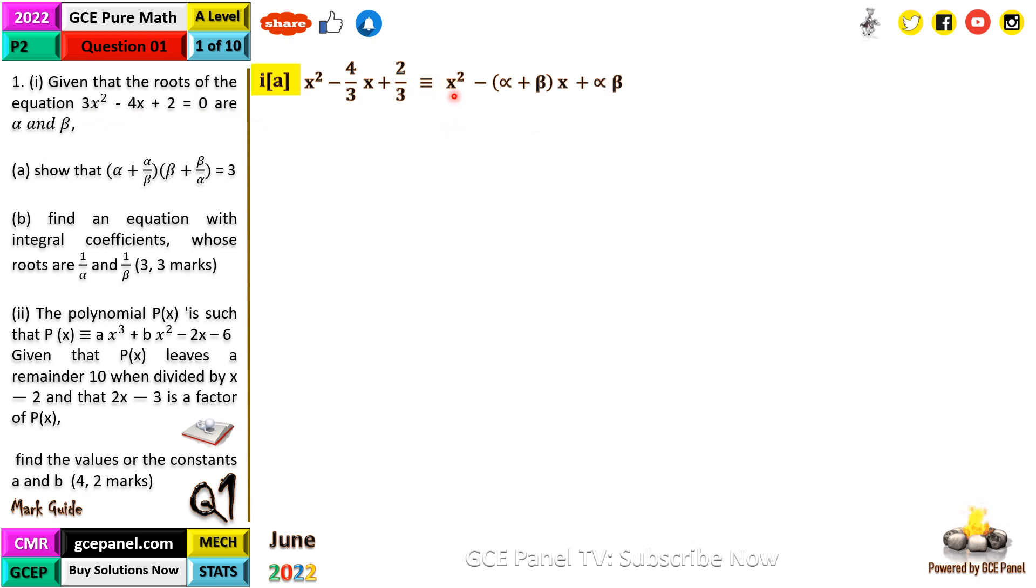This should be identical to x² minus (α + β)x plus αβ. Equating coefficients, we see that α + β equals 4/3 and αβ equals 2/3.